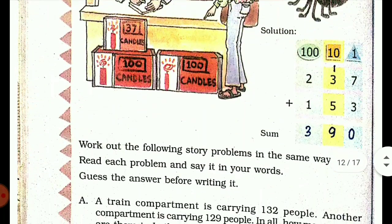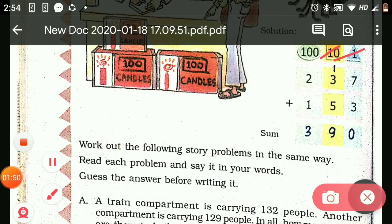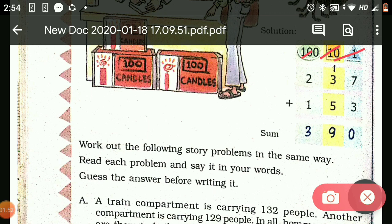This is ones, tens, hundreds. They have mentioned ones, tens, and hundreds. 7 plus 3 is 10, so zero and carry one on the top. Next, 1 plus 3 plus 5 is 9, and 2 plus 1 is 3.